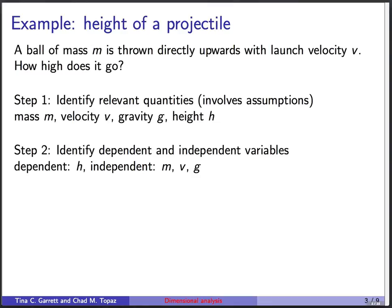Next we want to choose what are the dependent and independent variables. The dependent variable is the thing you want to figure out, right? The thing we've asked is how high does the ball go, so our dependent variable is h, the ball's height. The independent variables are everything else, the mass, the velocity, and gravity.